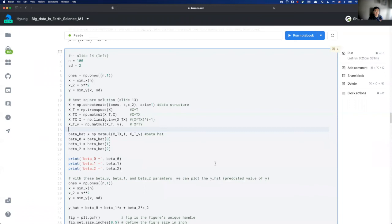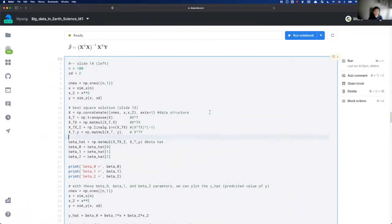With this code block you can see how we can implement this solution to find best least squares solution for three beta for the quadratic model. Please check this code line.